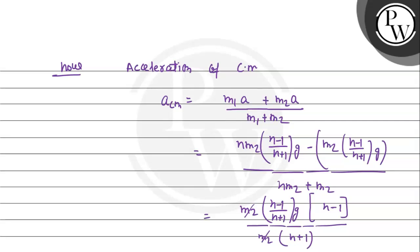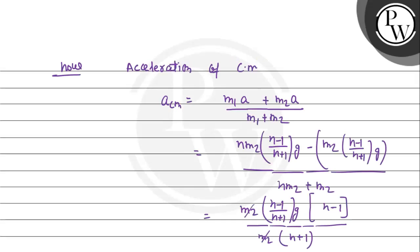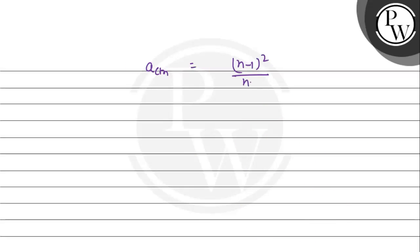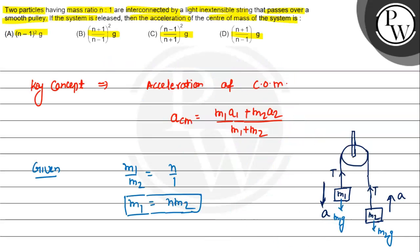After simplification, m2 cancels from numerator and denominator, giving a_cm = (n−1)² / (n+1)² × g. Checking the options, option C is correct. Hope you understood it well, all the best.